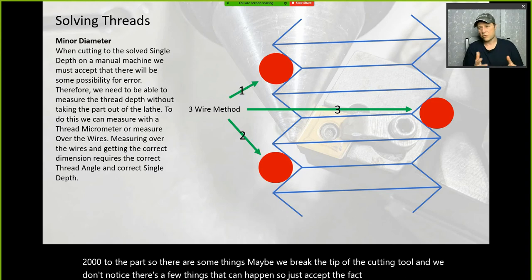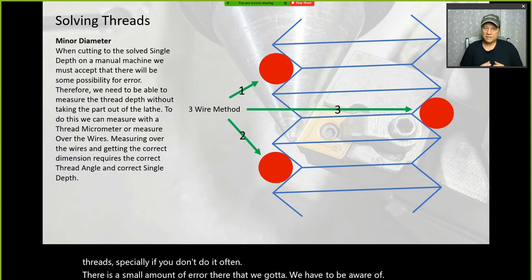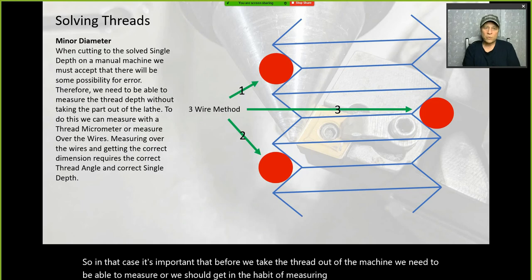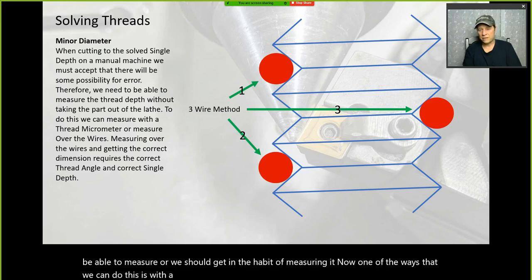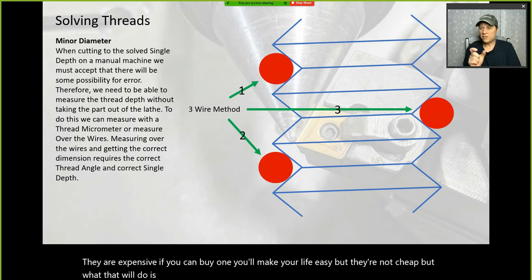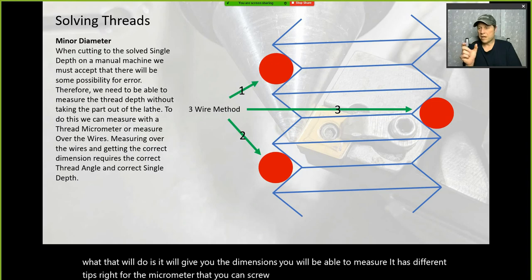It's important that before we take the thread out of the machine, we measure it. One way is with a thread micrometer — they are expensive but they make life easy. It will give you the dimensions with different interchangeable tips for the micrometer, and you can measure across the roots of the thread.